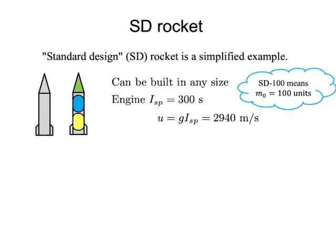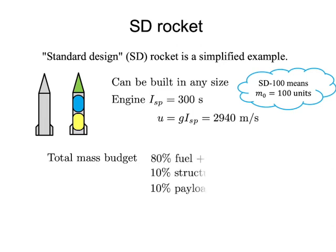The mass of the standard design rocket is apportioned in a particular way. About 80% of the total mass is fuel and oxidizer — four-fifths is the stuff that will be expelled as exhaust during flight. About 10% of the mass is structure: fuel tanks, fuel pumps, rocket engines, and all the parts needed to make the rocket work. And about 10% of the mass is the useful payload at the top of the rocket.